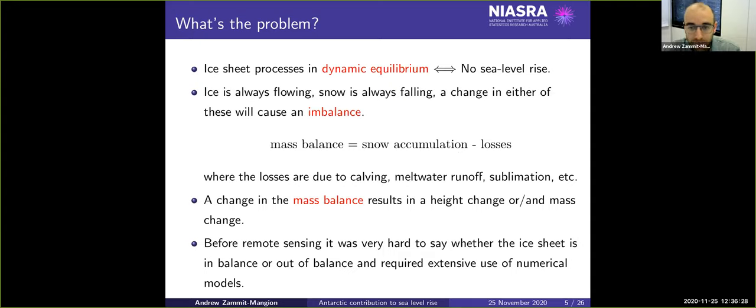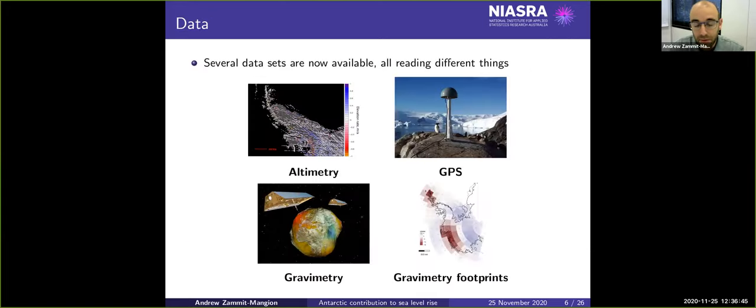And the change in mass balance is actually what contributes to sea level rise or sea level drop. Before we had satellites and remote sensing instruments it was actually quite difficult and still is very difficult to know what's going on in Antarctica on a continental scale. There are many data sets we could use to figure out what's going on.